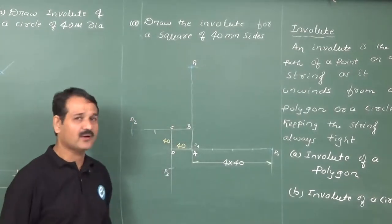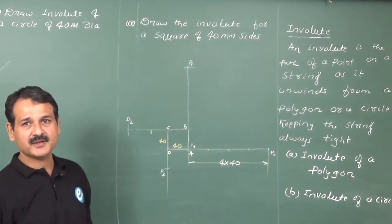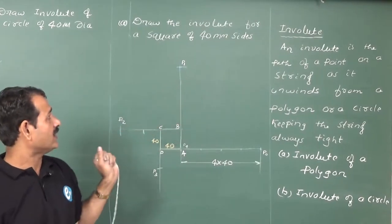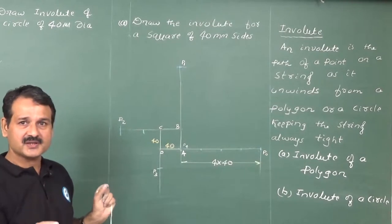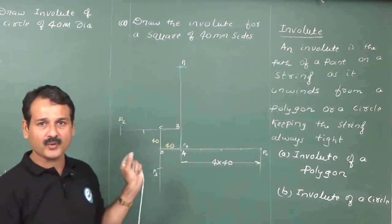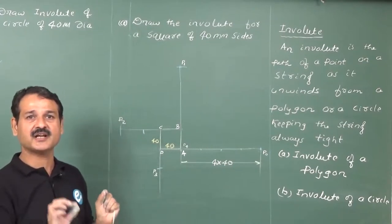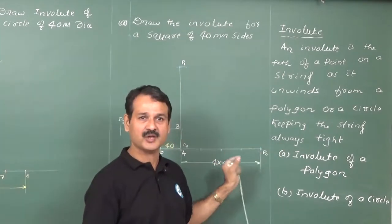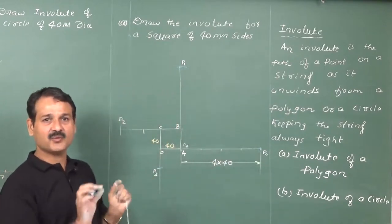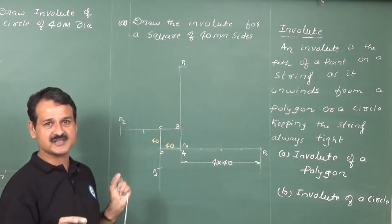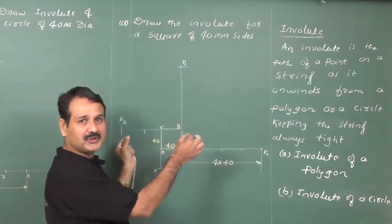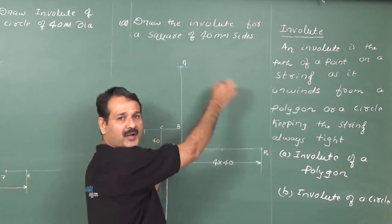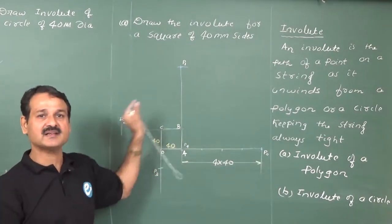An involute is the locus of a point on the end of a string when the string is made to wind or unwind from a polygon or a circle. To draw an involute, we take a flexible, inextensible string and wind or unwind it from a polygon or circle, always keeping the string tight. The path traced by the free end of the string is the involute.